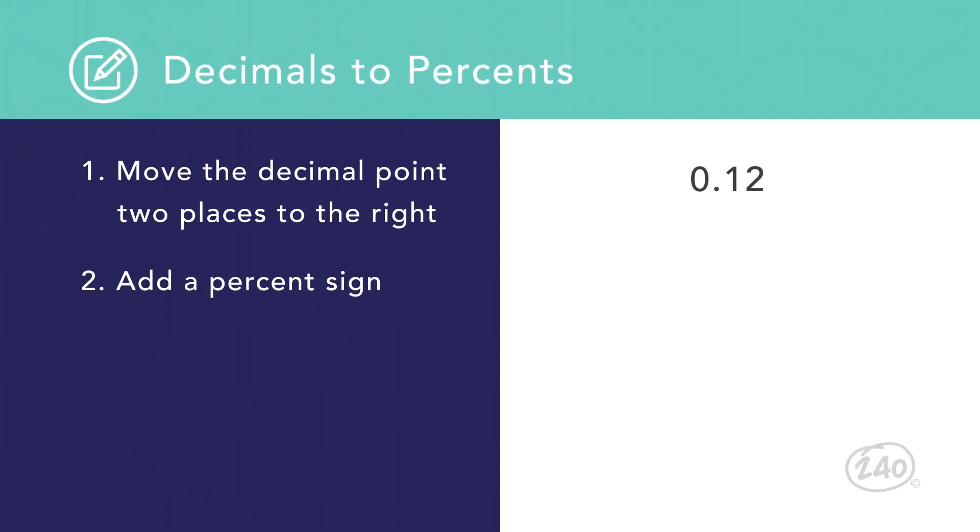To convert a decimal into a percent, move the decimal place twice to the right by multiplying the number by 100, then write the percent symbol at the end.